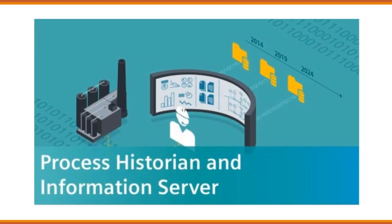Process Historian. A process historian is a specialized software application used to collect, store, and analyze historical data from industrial processes. It captures real-time process data and provides a comprehensive record of process variables, alarms, events, and trends, enabling performance analysis, troubleshooting, and optimization.